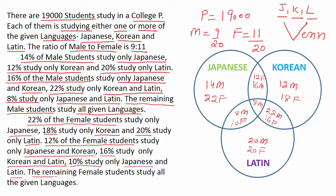The last point: the remaining female students study all the given languages. We need to find the remaining female students by adding all female percentages and subtracting from 100. So: 22+12=34, 34+18=52, 52+16=68, 68+20=88, 88+10=98. So 100 minus 98 is 2%. We write 2F in all the given languages. Now all points are completed and our Venn diagram is also completed.